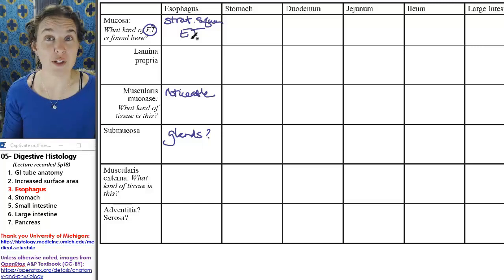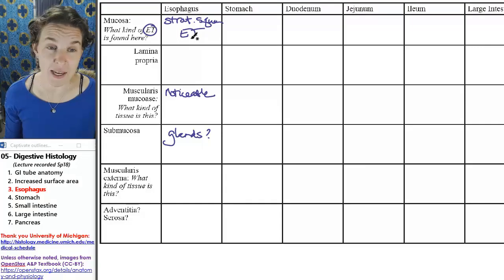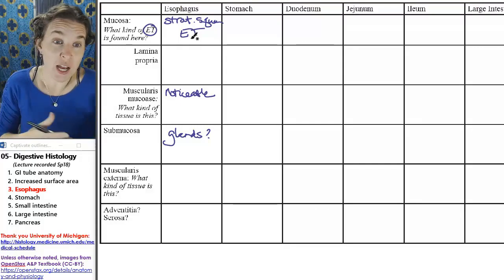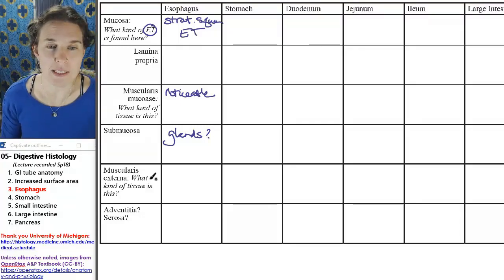In the future, if we're dealing with other kinds of tubes like vaginas, there's other tubes out there that have stratified squamous epithelium lining the lumen. So vagina, esophagus, don't want to mess that up.